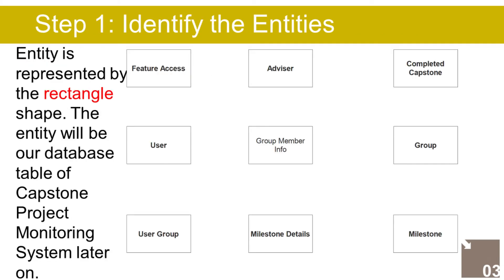Step 1: We will identify all the entities. An entity is represented by the rectangle shape, and will become our database table of the Capstone Project Monitoring System later on. In the CPMS we have the following entities: 1. User, 2. User Group, 3. Feature Access, 4. Advisor, 5. Group Member Info, 6. Group, 7. Completed Capstone, 8. Milestone, 9. Milestone Details.